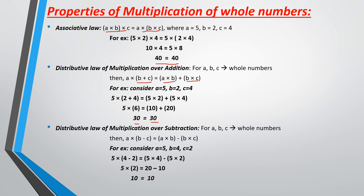Distributive law of multiplication over subtraction: this is similar to the distributive law over addition, but the operation used is subtraction instead of addition. The same rules apply, and the left-hand side is still equal to the right-hand side when we substitute values of A, B, C given that A, B, C are whole numbers.